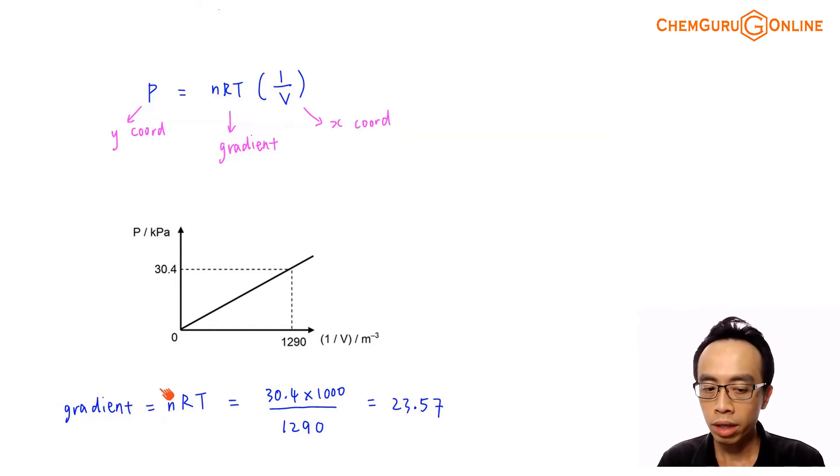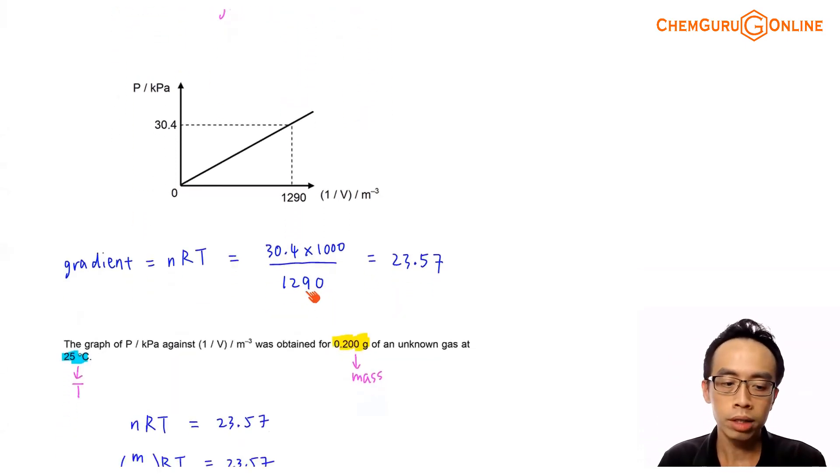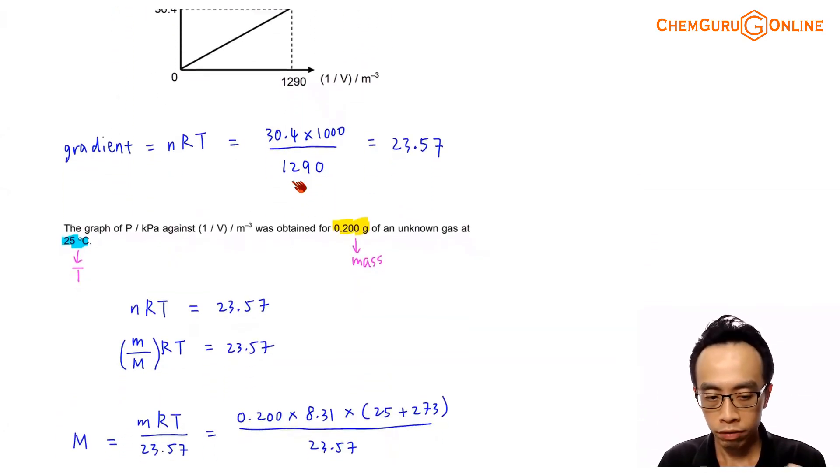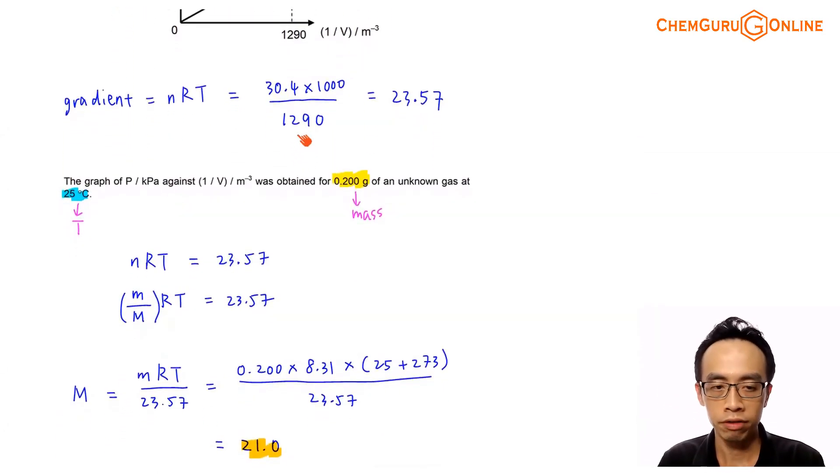So the gradient is equals to nRT and based on this graph, we know that the gradient is 30.4 times 1000 because we are converting kilo Pascal to Pascal divided by 1290 in terms of per meter cube. So the gradient that we are getting, this value is 23.57. So now I know that this 23.57 is equals to nRT.